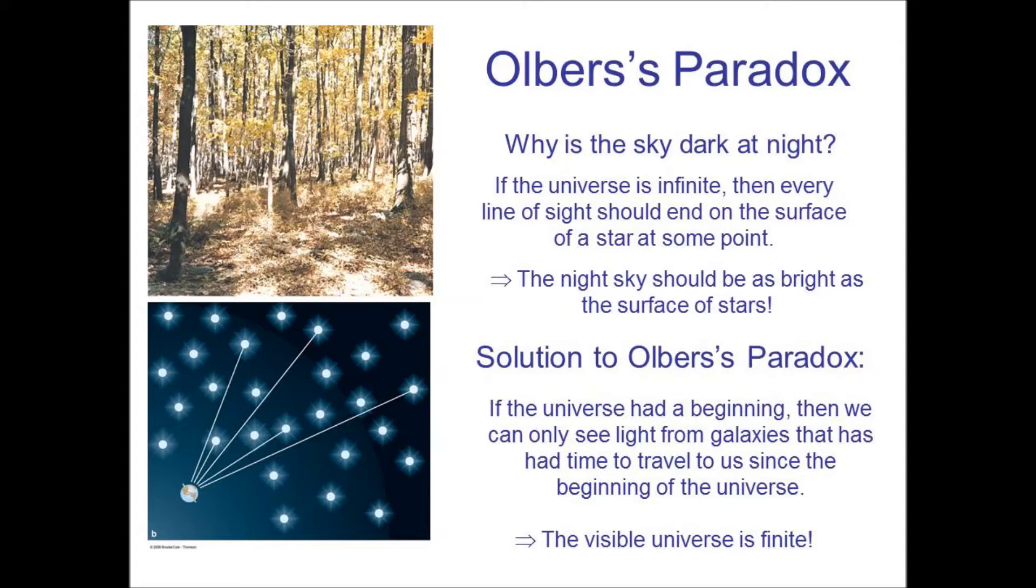There have been various questions throughout history that questioned those ideas. One of these is called Olbers's Paradox. Olbers's Paradox is basically a question: Why is the sky dark at night? With the assumption that the universe is infinite in all respects, we shouldn't have a dark sky. If the universe is infinite, when you look out into space, if you look far enough away, you would eventually see the surface of a star.